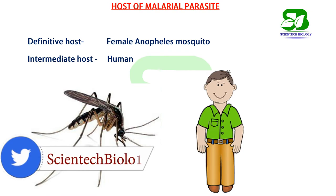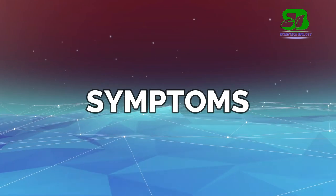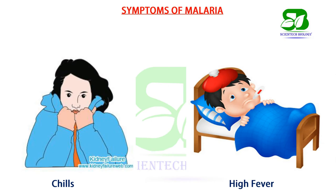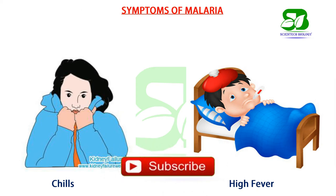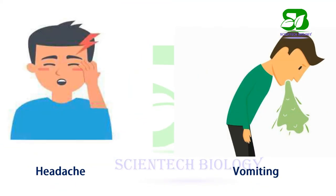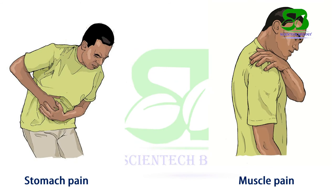Plasmodium completes its life cycle in two different hosts. The female Anopheles mosquito is the primary host and human is the secondary host. The symptoms of malaria include febrile paroxysm, which takes place at regular intervals. The symptoms are chills lasting 15 minutes to 1 hour, high fever of approximately 106 degrees Fahrenheit lasting 2 to 4 hours, headache, vomiting, and diarrhea. Anemia also occurs due to destruction of RBCs by the parasites, along with feelings of stomach pain and muscle pain.